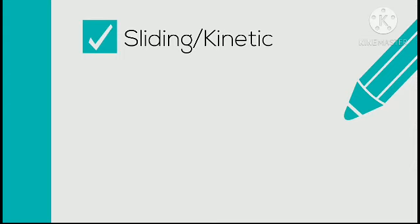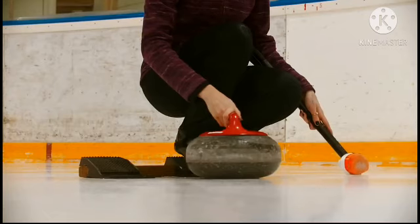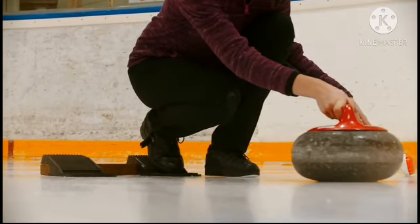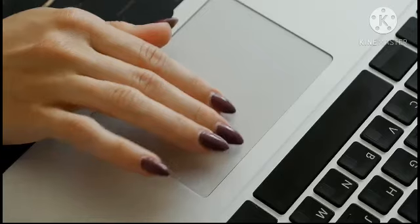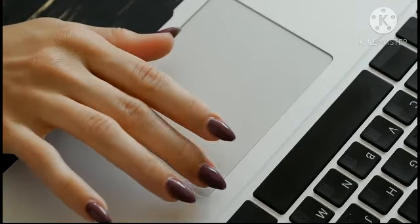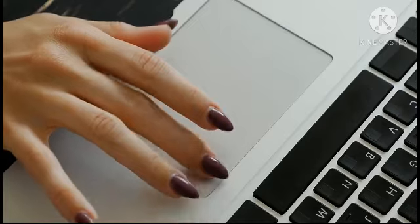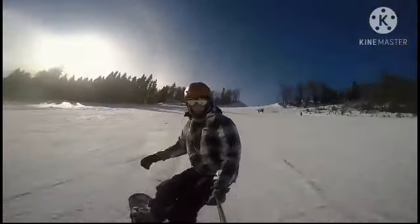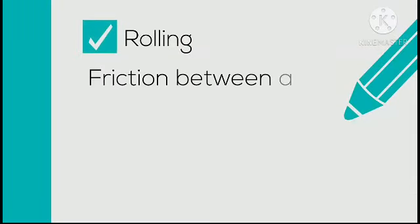Now we have sliding or kinetic friction. This is the friction that occurs when two surfaces move past each other. The machine sliding on the ground has kinetic friction. When you move your fingers across the laptop, there is kinetic friction. Sliding on the snow is also kinetic friction.